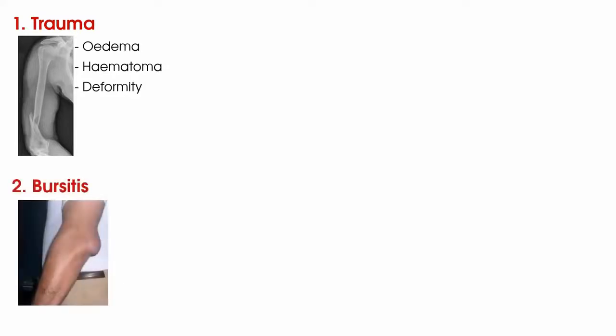Number two is bursitis, which put simply is inflammation of a bursa. Some bursae are more easily seen when inflamed — for instance olecranon bursitis or student's elbow can be easily visualised as the bursa lies right beneath the subcutaneous layer of the skin. Others, like subacromial bursitis, are not so easily visualised as the bursa lies in a relatively deep position underneath the acromion. In a bursitis you may see redness and feel warmth on palpation. Always consider whether this was caused mechanically or by infection, in which case your patient may be systemically unwell.